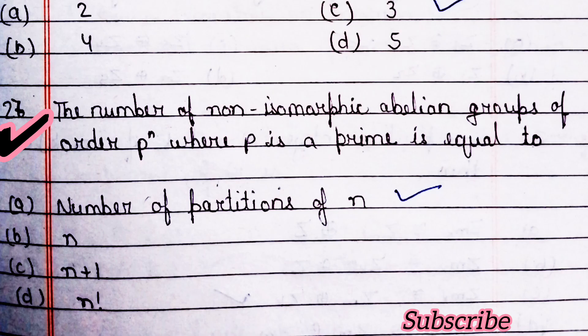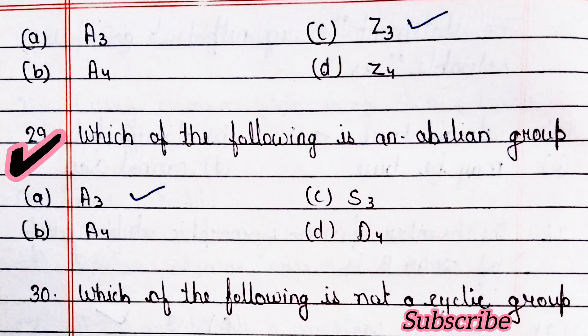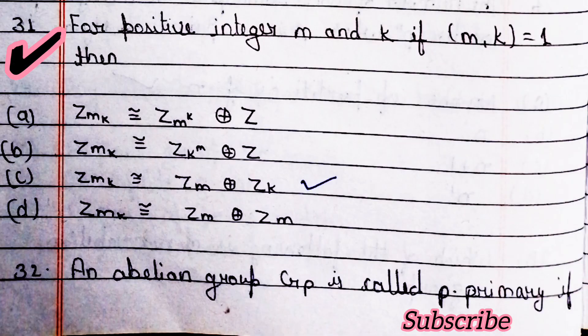Next question: the number of non-isomorphic abelian groups of order 8 is 3 — option C is right. Next question: the number of non-isomorphic abelian groups of order p^n, where p is prime, is equal to the number of partitions of n — option A is right. Next question: which of the following is a non-abelian group — option C is right.